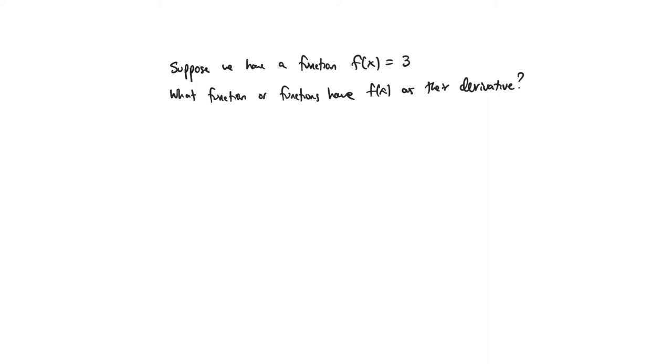In this case, we can answer the question very simply by just thinking geometrically. Since the derivative of a function is the slope of the tangent line, we want a function whose slope at any point is this constant of 3. So that means that the function could be linear.